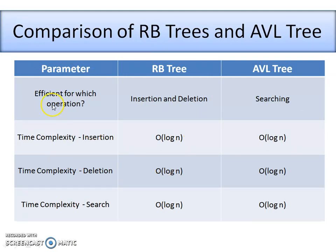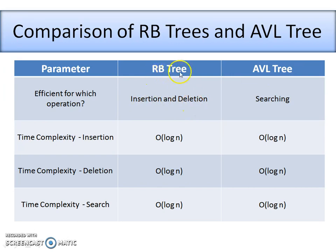The next parameter is which operations can be performed efficiently on Red-Black trees versus AVL trees. Insertion and deletion can be performed efficiently with Red-Black trees because recoloring helps maintain balance more easily. For searching, the AVL tree is more efficient because AVL trees are more strictly balanced. Since making an AVL tree balanced requires only rotations which are more strict, searching is faster. So, if insertion and deletion are the primary concern, use Red-Black trees; if only searching is concerned, use AVL trees.